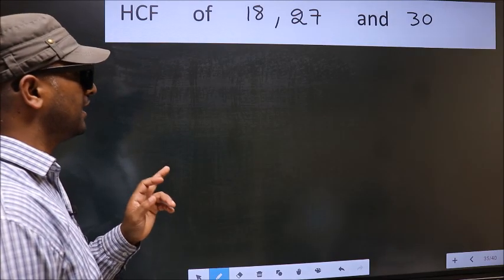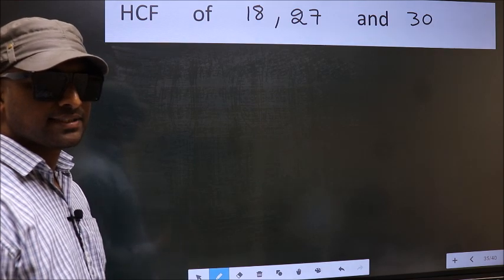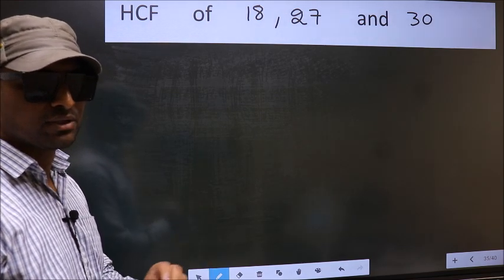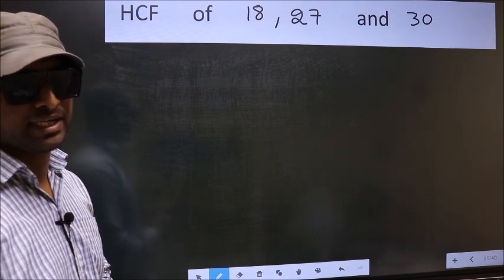HCF of 18, 27 and 30. To find the HCF, we should do the prime factorization of each number separately.